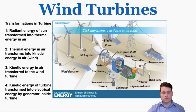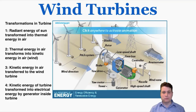These are the transformations that happen in order to make wind turbines possible. First, the radiant energy from the Sun is transformed into thermal energy in the air — that just means light from the Sun heating the air up until it begins to move. When it begins to move, thermal energy in the air is changed into kinetic energy in the air, which can then be captured as kinetic energy in the turbine.